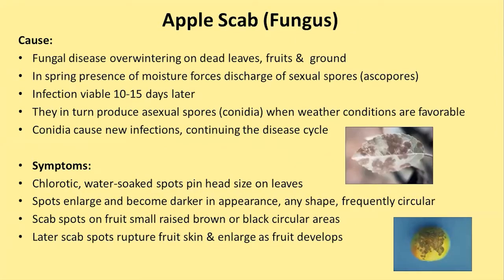Apple scab is a fungal disease overwintering on dead leaves and fruit on the ground—sanitation is again key. In spring, moisture forces a discharge of sexual spores called ascospores, and the infection is viable for 10 to 15 days. These in turn produce asexual spores called conidia when weather favors it, and the conidia cause new fungal growth, creating a cycle that continues over and over throughout the season.